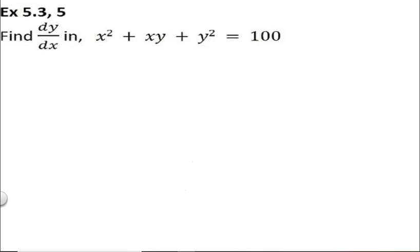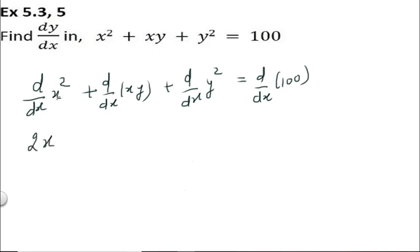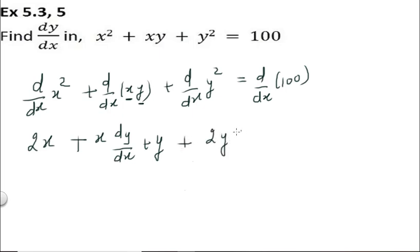Question 5: find dy/dx for x² + xy + y² = 100. We write d/dx of x² + d/dx of xy + d/dx of y² = d/dx of 100. The constant differentiates to 0. d/dx of x² = 2x. For xy, using the product rule: first function as is times derivative of second, plus second function as is times derivative of first. That gives x·dy/dx + y·1. For y², it is 2y·dy/dx.